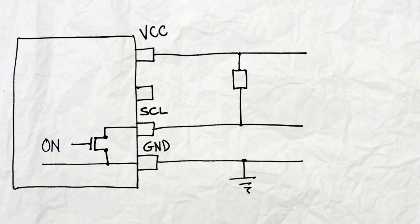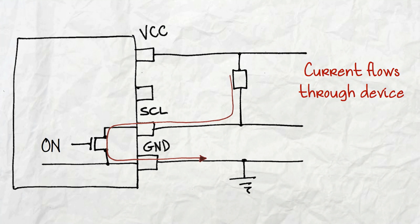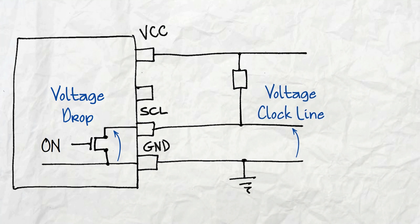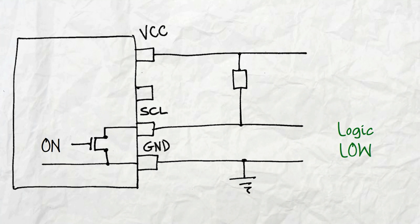Now, when the transistor is on, the resistance drops considerably, but it's not zero. A current is now flowing through the device, and the voltage drop across the transistor corresponds to the voltage on the clock line. This voltage drop is almost zero, so that the signal at the clock line is at logic low.